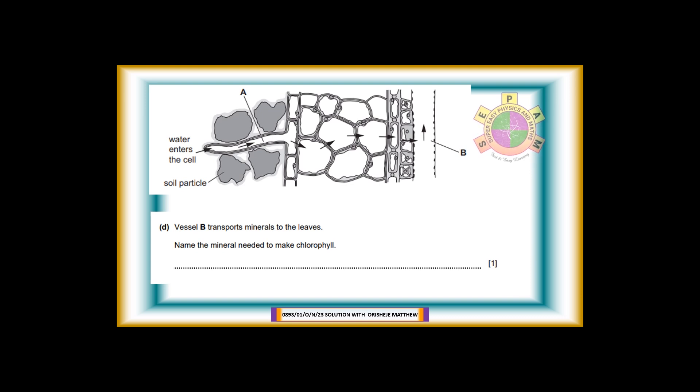Question 1d. Vessel B transports minerals to the leaves. Name the mineral needed to make chlorophyll. For one mark. Answer: Magnesium ion. What is chlorophyll?